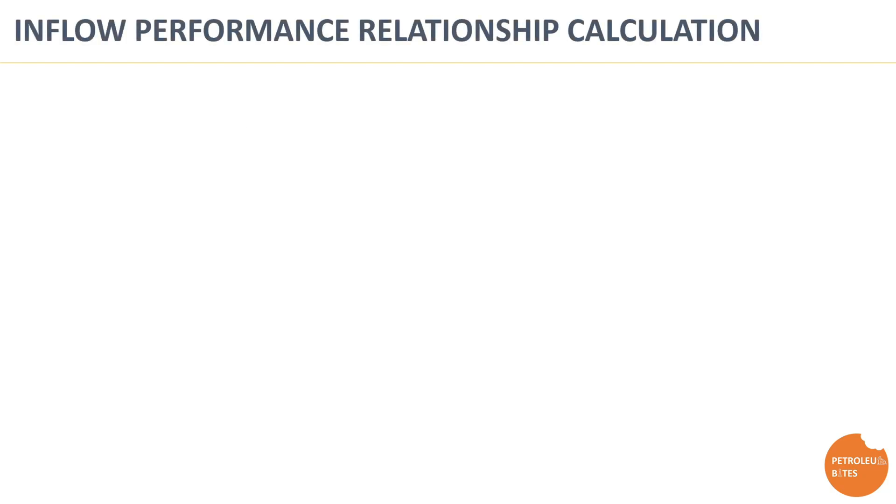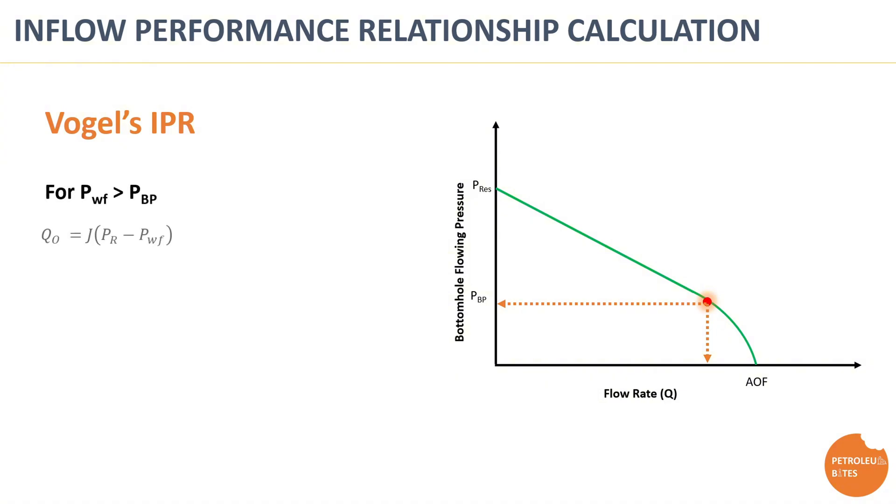There are many ways to create IPR curve. One of these methods is Vogel IPR. When the bottom hole flowing pressure is greater than the bubble point pressure, flow rate is calculated by the knowledge of Productivity Index and the amount of drawdown. When the bottom hole flowing pressure falls below bubble point, flow rate is calculated by using Vogel calculation method as shown in the equation.